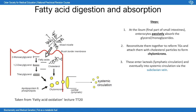Before absorption into the lacteals, the absorbed components are reconstituted back into triglycerides within the endoplasmic reticulum of enterocytes, then attached to cholesterol and lipoproteins to form chylomicrons. These chylomicrons are taken up by the lacteals and enter lymphatic circulation.